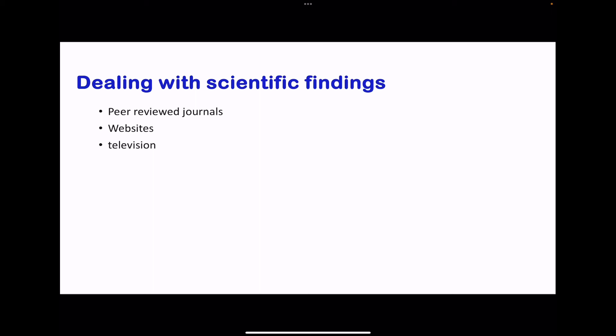Next, we look at dealing with scientific findings. This question rarely comes up, but sometimes they can ask how someone would deal with experimental data. They can submit that data to peer reviewers — a group of scientists who review new scientific findings to see if they are appropriate to be published. If acceptable, it can be published for other people to see — on websites, television, radio, and so on. Scientific findings have to be sent out to other people who can learn from the experimental findings.